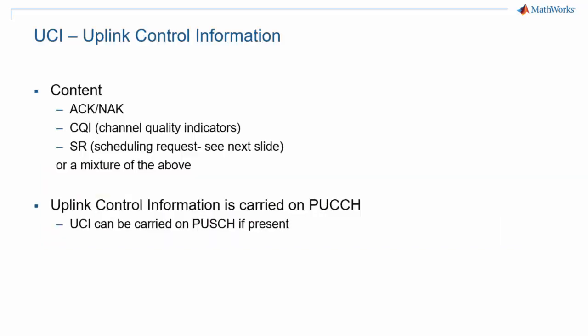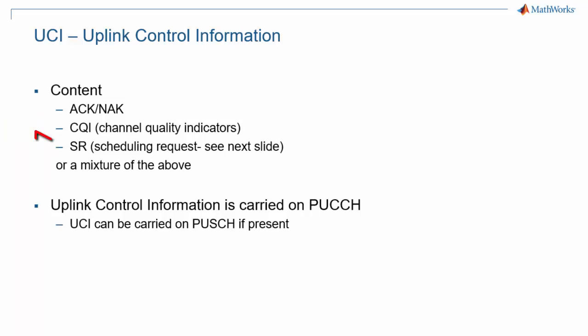Uplink control information or UCI is very different from downlink control information or DCI. DCI carries scheduling information for downlink and uplink, among other pieces of information. UCI content is more limited, as the base station is already aware of all scheduled transmissions. It includes acknowledgments for previously transmitted blocks, channel quality indicators or CQI, which lets the base station make decisions about beamforming and scheduling, as well as scheduling requests. Those pieces of information can be combined and transmitted simultaneously.